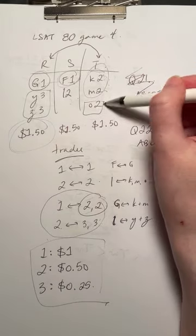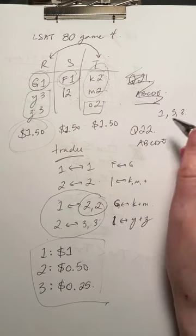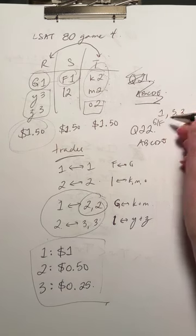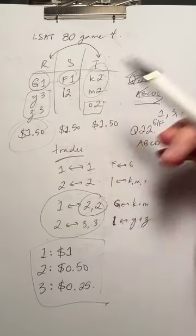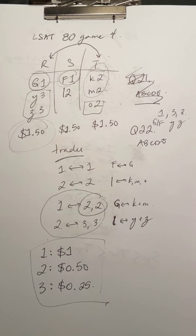It can't trade three 2s for two 1s, because that's not allowed. So yeah, this one, it owns either G or F, and it has to own Y and Z because those are the only 3s available. So E is the correct answer for 22.